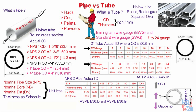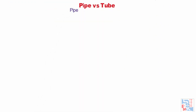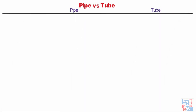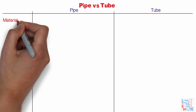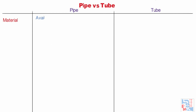To determine the ID of a pipe or tube, subtract 2 times the thickness from the OD. After this basic difference of shape, ID or OD, and thickness, we will see some more differences like material. For a pipe, a wide range of materials is available — carbon steel, stainless steel, alloy steel, etc.